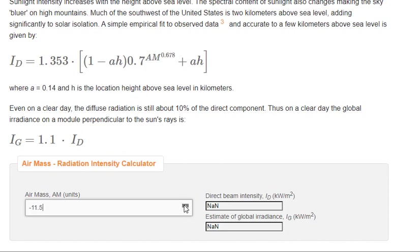where A equals 0.14 and H is the location height above sea level in kilometers. Even on a clear day, the diffuse radiation is still about 10% of the direct component. Thus on a clear day, the global irradiance on a module perpendicular to the sun's rays is calculated.